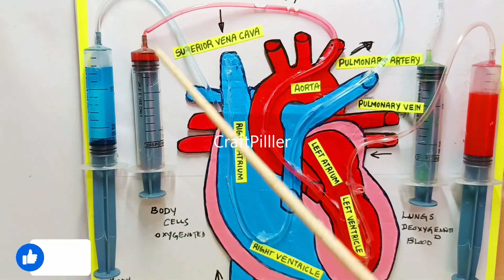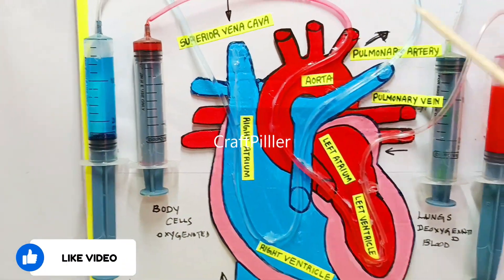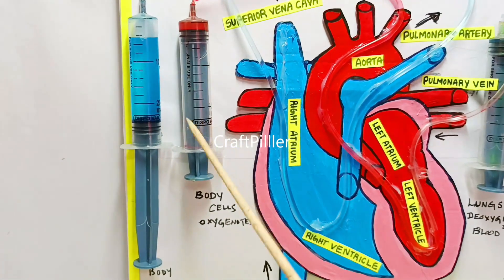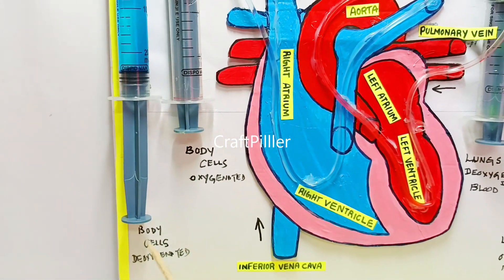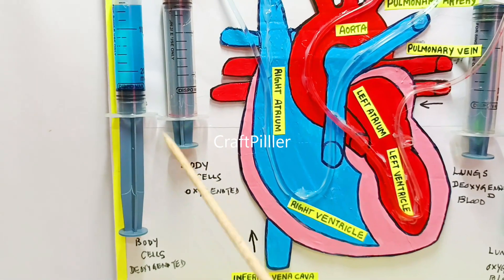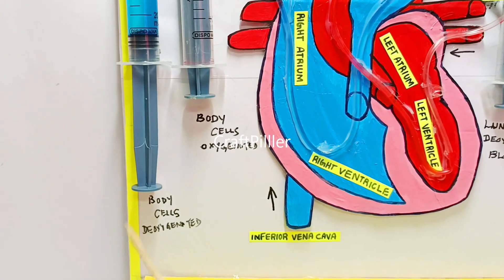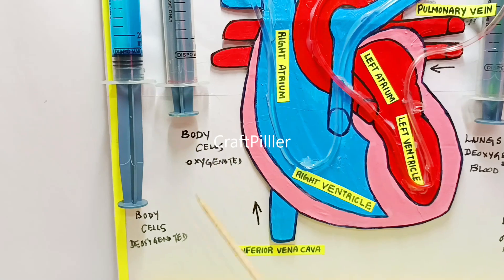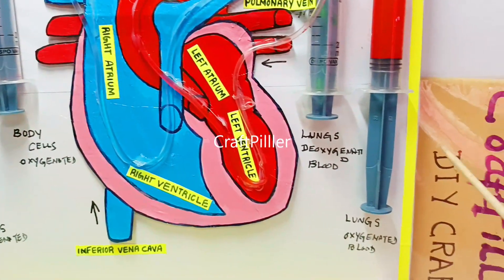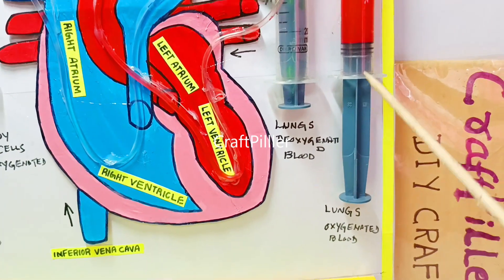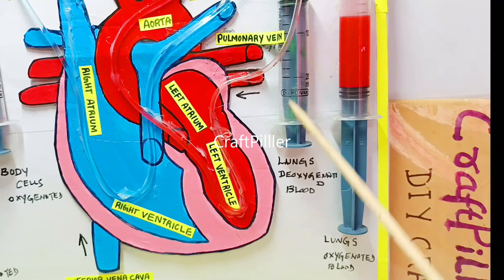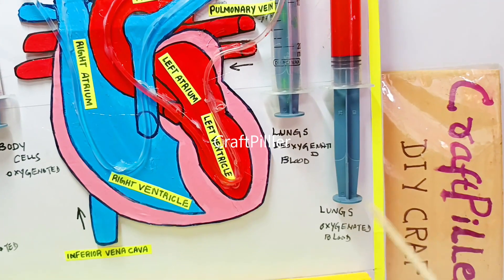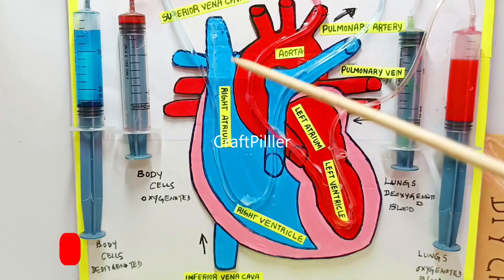We use four syringes here — two left syringes and two right syringes. The two left syringes are connected to the human body cells: one represents body cells with deoxygenated blood, and another with oxygenated blood. Similarly, on the right side, we have one syringe for lungs with deoxygenated blood and another for lungs with oxygenated blood.